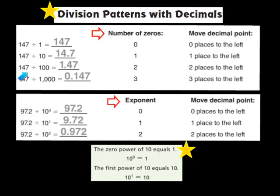Our next problem shows 147 divided by 100. In the number 100, there are two zeros. So what that means is I'm now going to move the decimal two places to the left. So our answer turns out to be 1 and 47 hundredths.